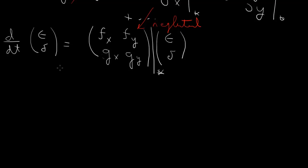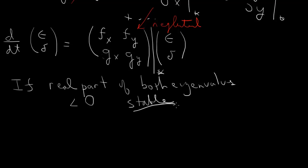So if the real part of all the eigenvalues is less than 0, then epsilon and delta will decay. If the real part of both eigenvalues is less than 0, then stable, because epsilon and delta decay.